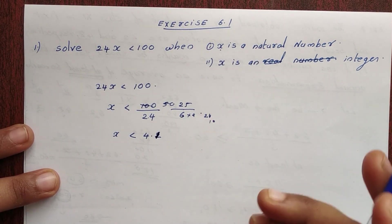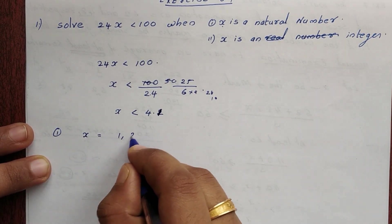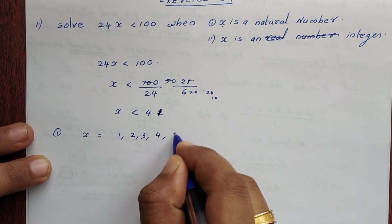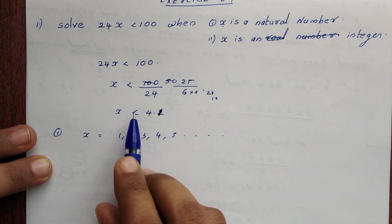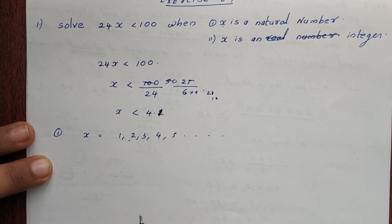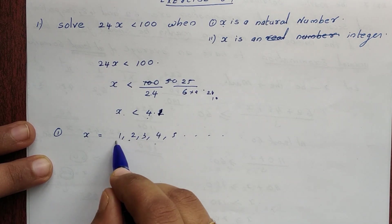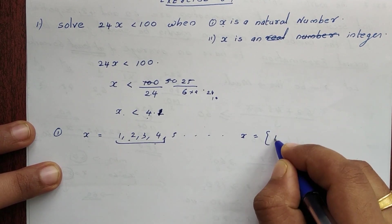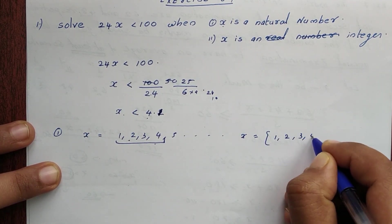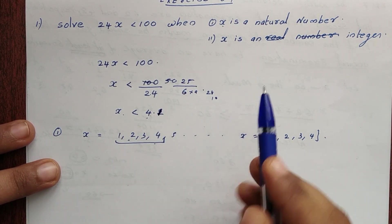First option: x is a natural number. Natural numbers are 1, 2, 3, 4, 5, etc. Since x < 4.1, and we need natural numbers, the solution is x ∈ {1, 2, 3, 4}. Because 4.1 rounds down to 4, the largest natural number satisfying the inequality is 4.